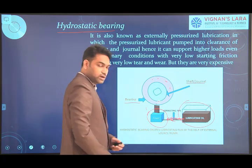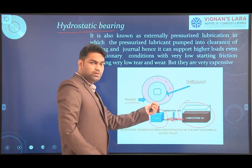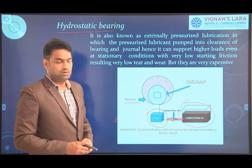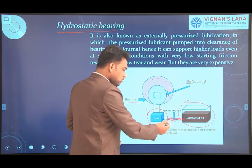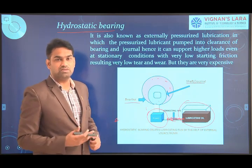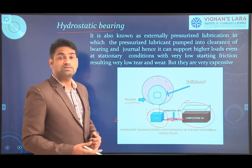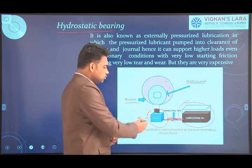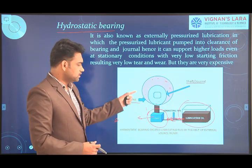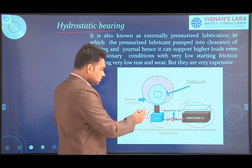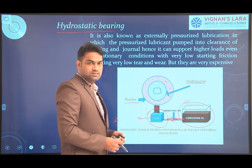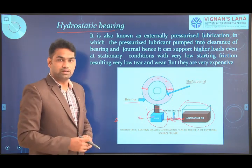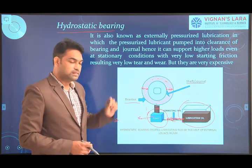The lubricant oil is taken from the lubricant sump and the pump supplies it into the clearance between the surfaces. At the initial stage there is direct metal-to-metal contact, but we do not start the journal at that moment. The pump increases the pressure of the lubricant and supplies it with increasing pressure. Whatever pressure is developed by the pump is sufficient to levitate the surface — the journal tends to levitate inside the bearing clearance, forming a thick film. Only then does the journal start rotating.